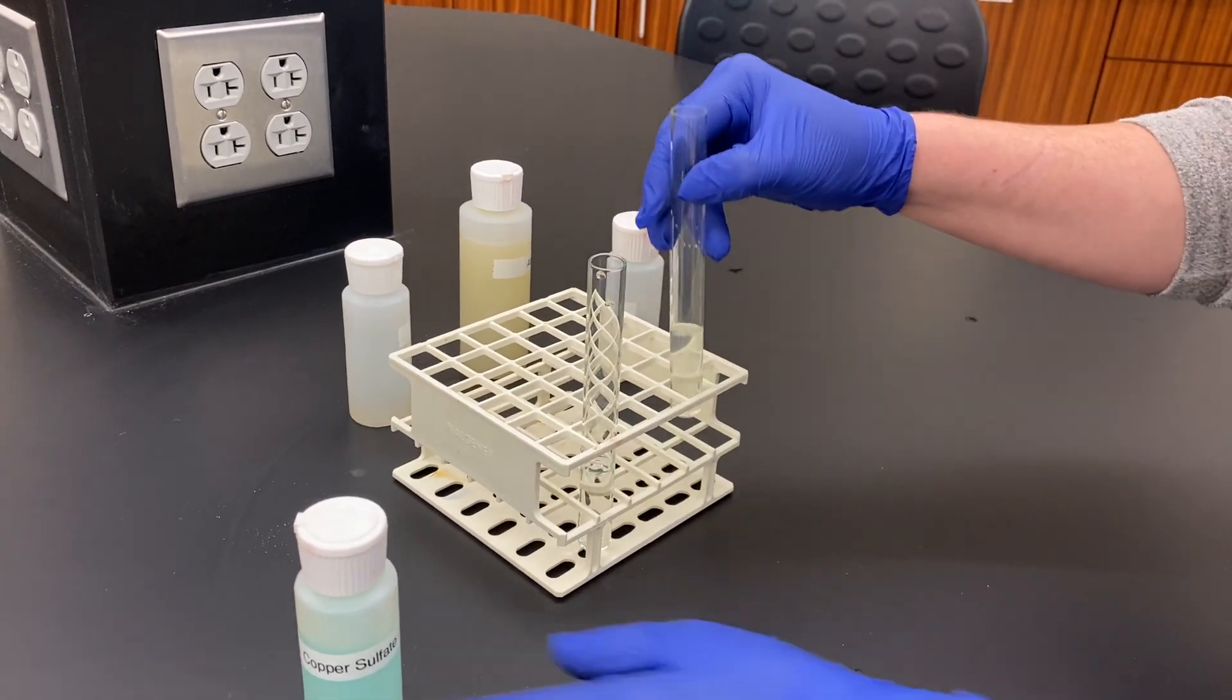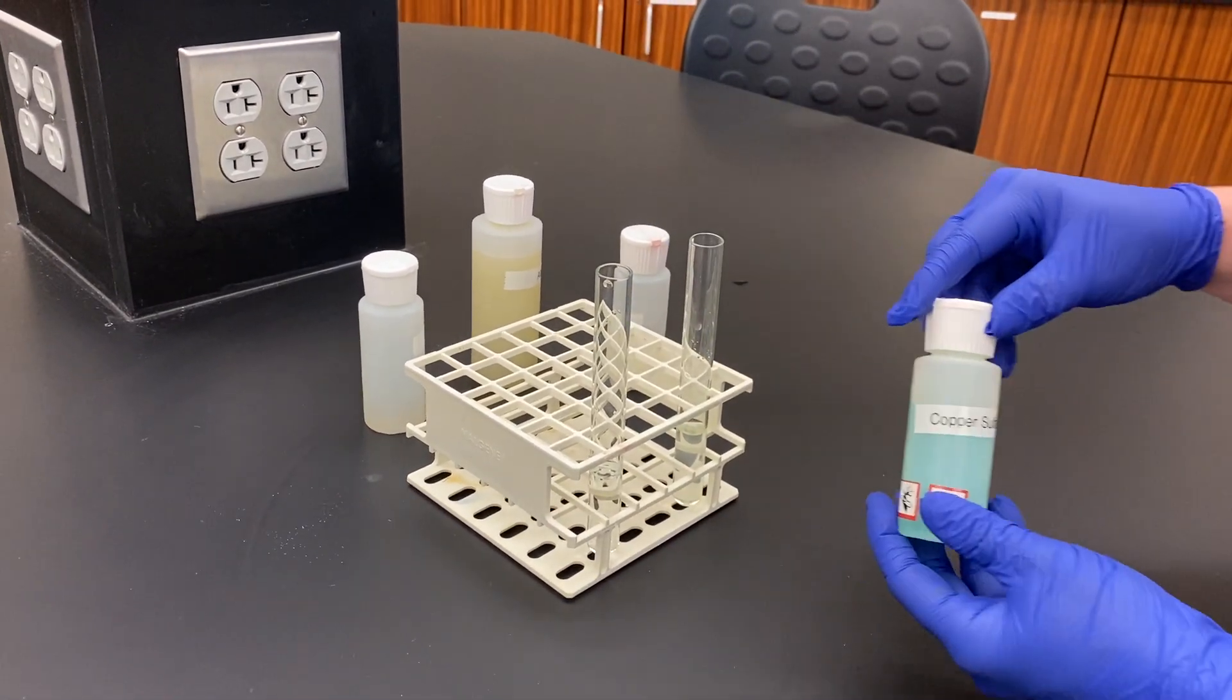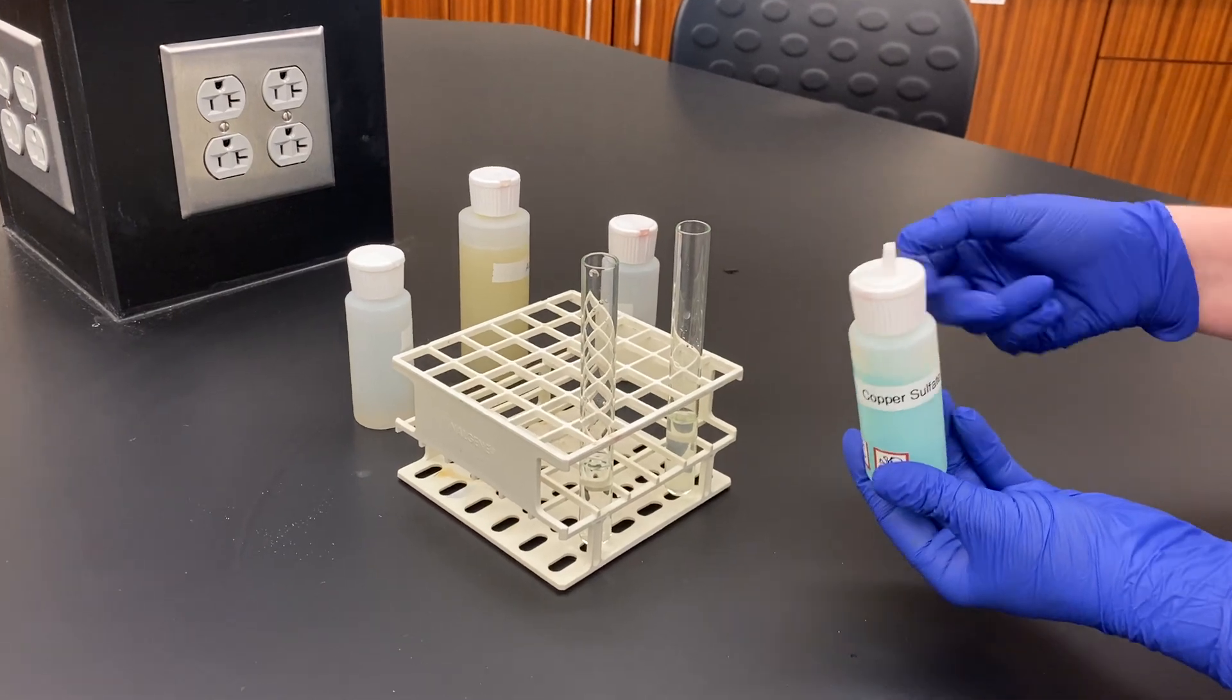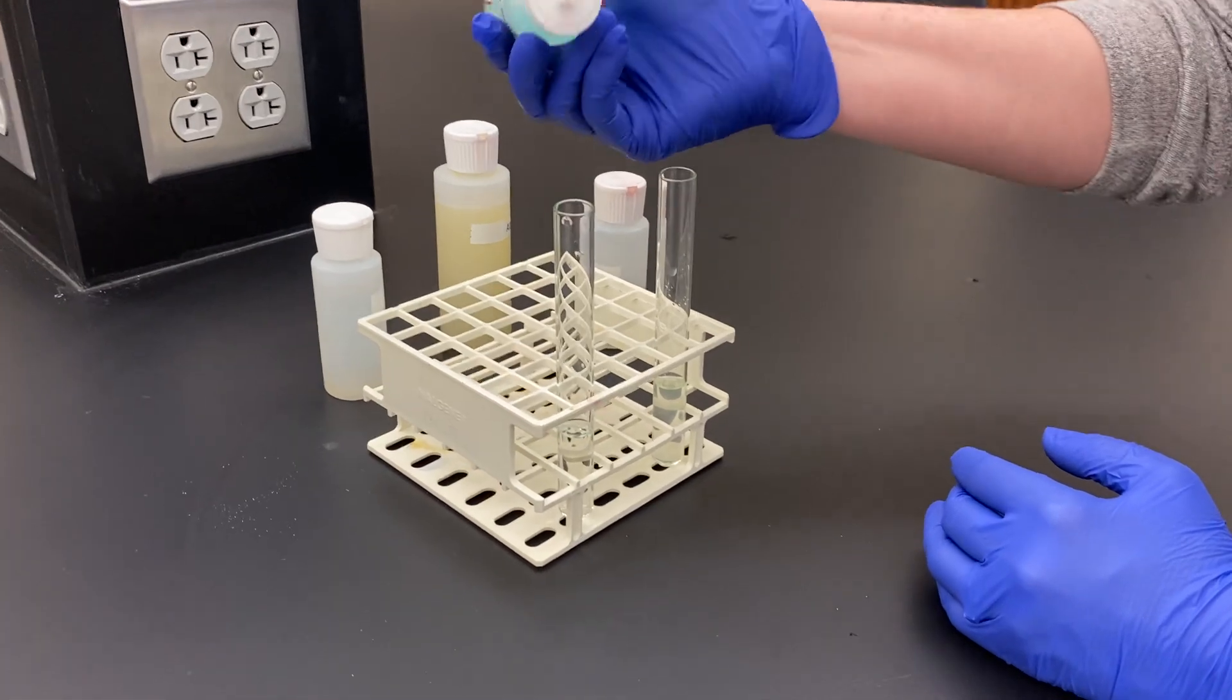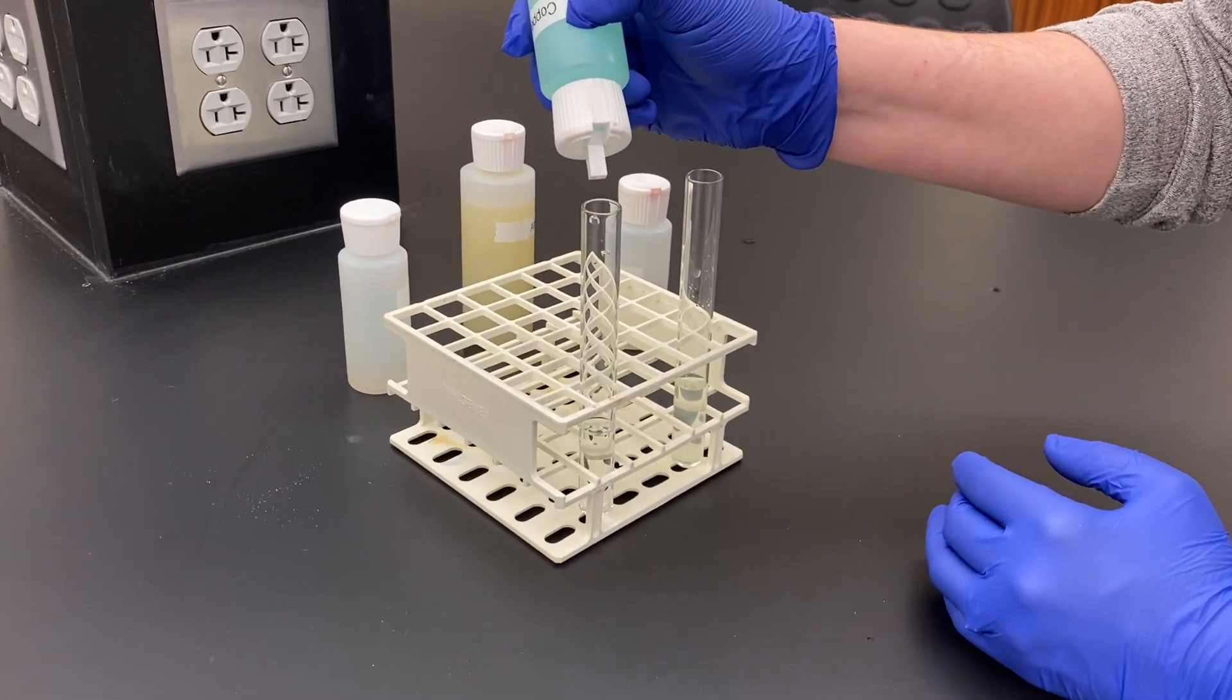And now we're going to add the copper sulfate. If this reacts with proteins, you're going to see a purplish pink color. And if there's no proteins present, you should see a blue precipitate forming.